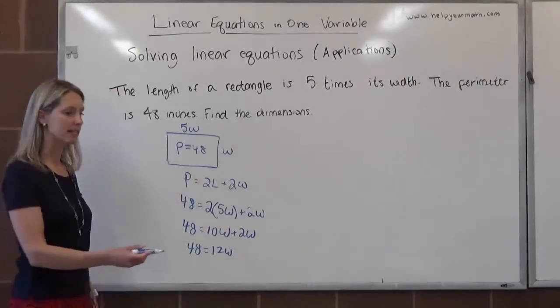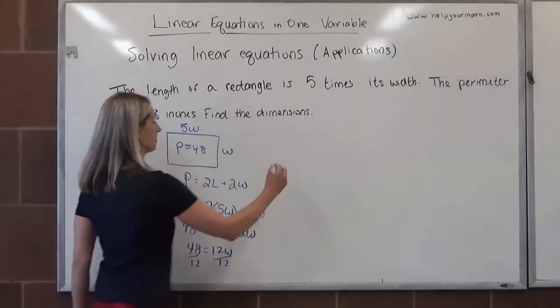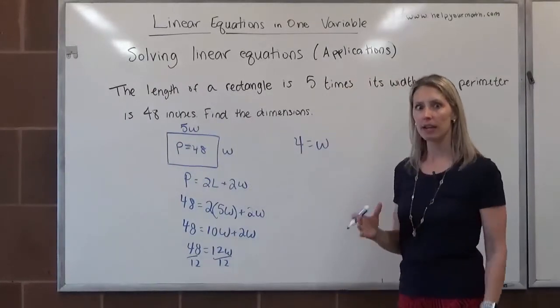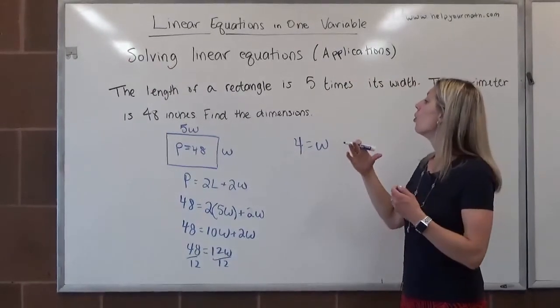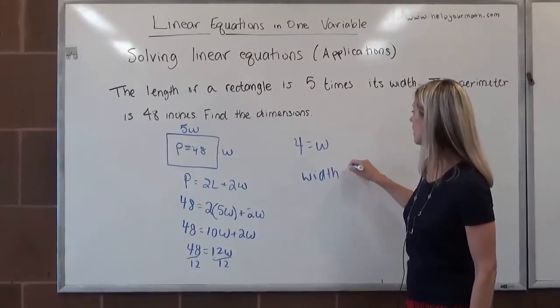To get w by itself, we will divide both sides by 12. And we end up with 4 equals w. So we know 4 is w, therefore we know that the width is 4 inches.